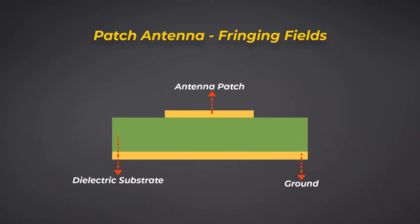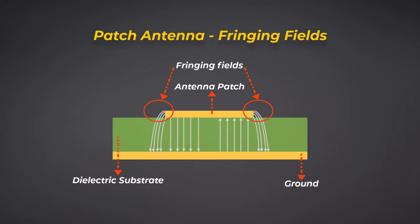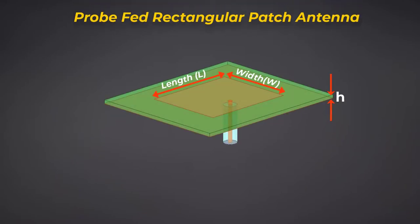MicroStrip Patch Antennas radiate primarily because of the fringing fields. The fringing electric fields between the patch edge and the ground plane. The length of the patch is a very critical parameter because this dictates the resonant frequency of the antenna structure.